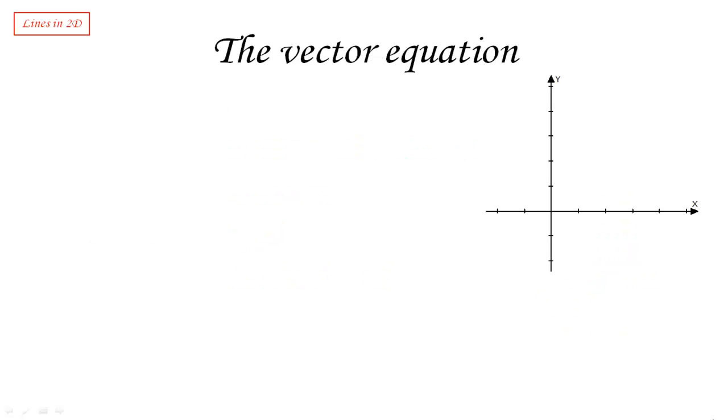There is another kind of equation that we can construct, which also describes a line. And it's also based on vectors and vector notation and vector algebra. And that's obtained as follows. So let's consider again the same line that we had before. Actually, it's not the same line. I've drawn it slightly differently, but it's the same idea.